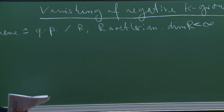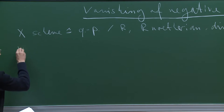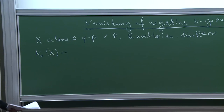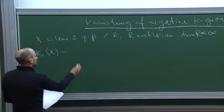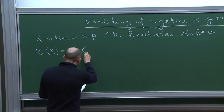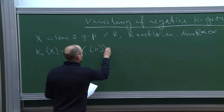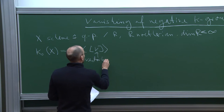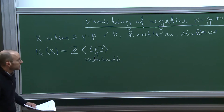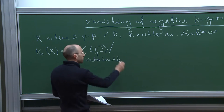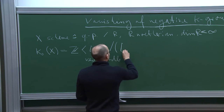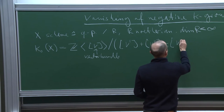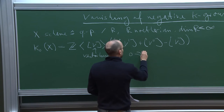First of all, we want to study K-groups, so let's start with K0 of the scheme X. Classically, you can define this as the free abelian group generated by the vector bundles V on X, modulo the exact sequences — that is, modulo the subgroup generated by elements of the form V' + V'' minus V, where you have a short exact sequence of this form.